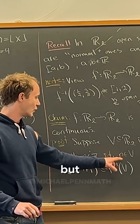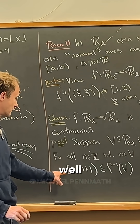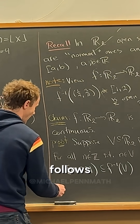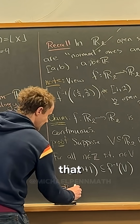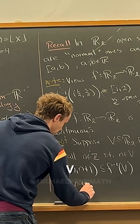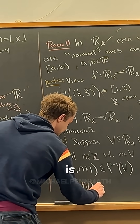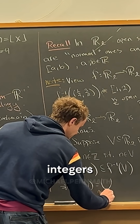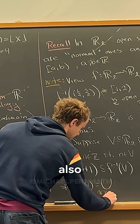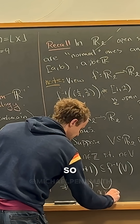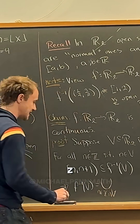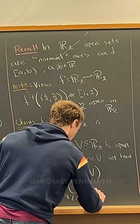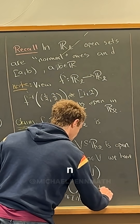N is in V, but what's everything that's mapped to N? It's going to be this. It follows pretty quickly that the pre-image of V is simply equal to the union over all integers that are also in V — so N in Z intersect V — of the bracket N, N plus 1.